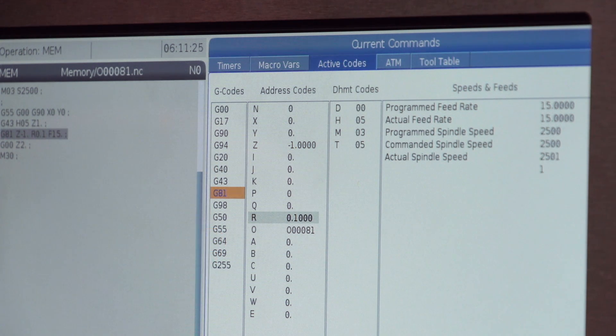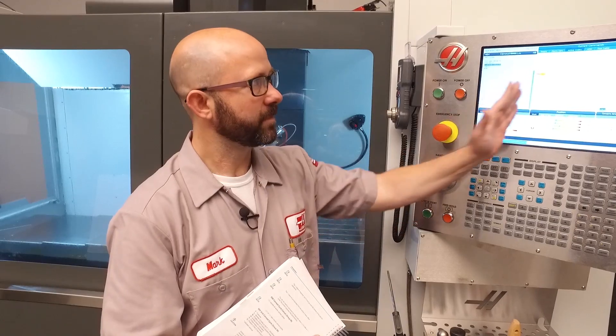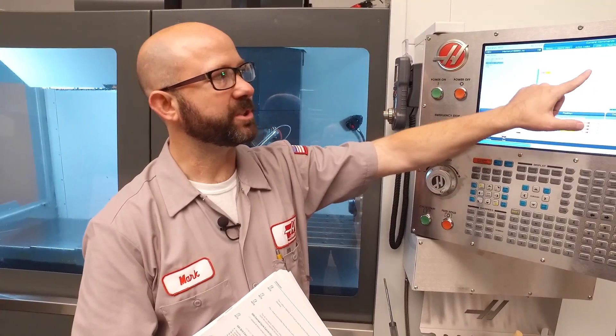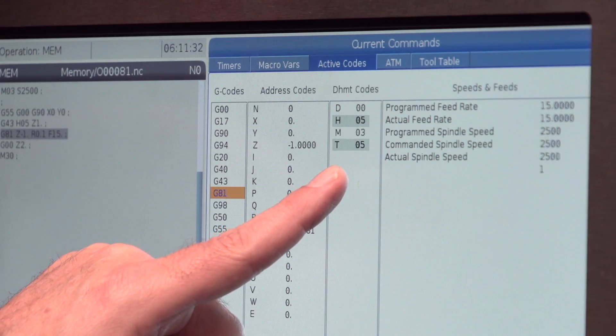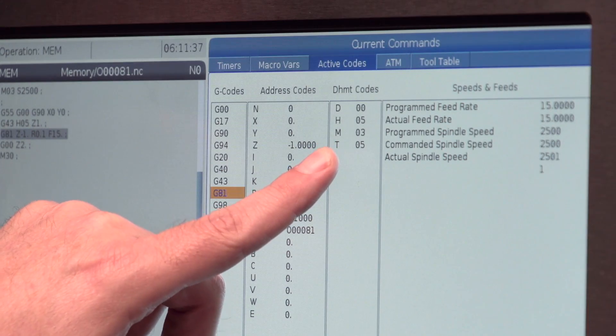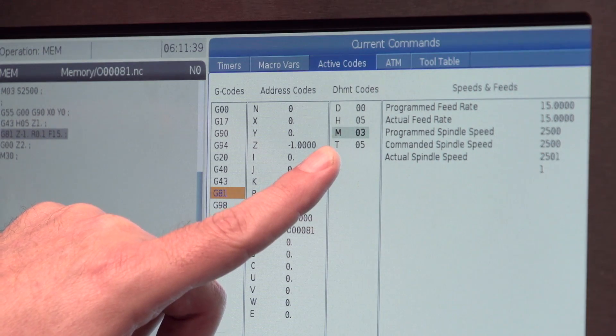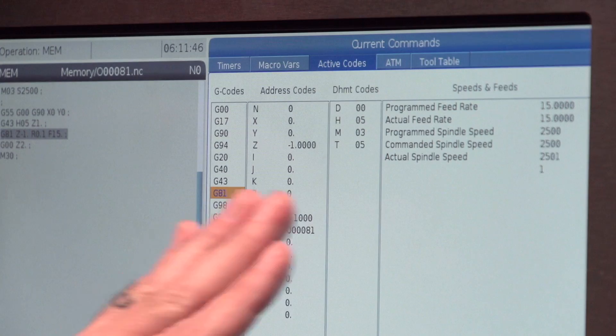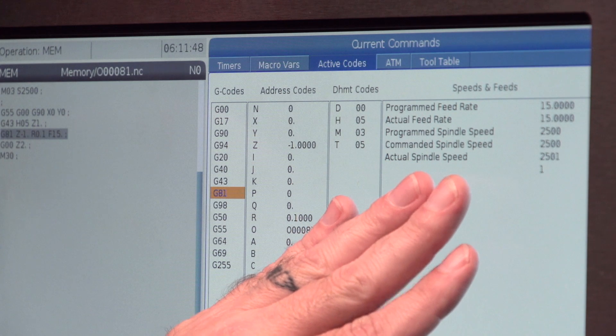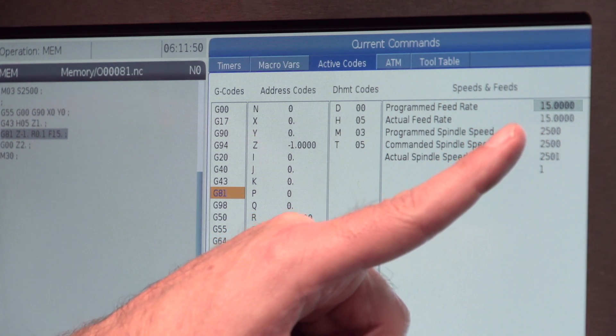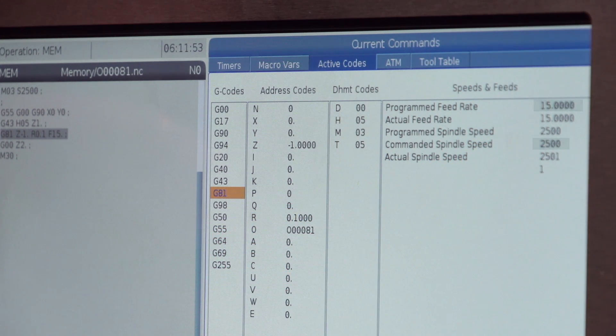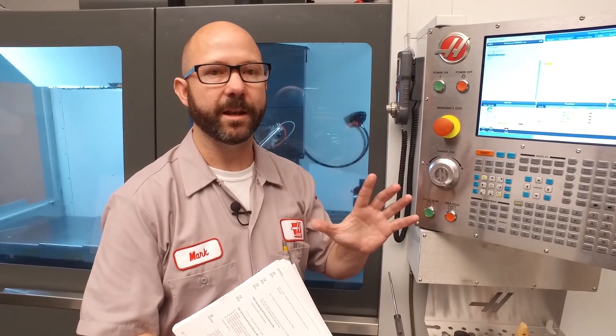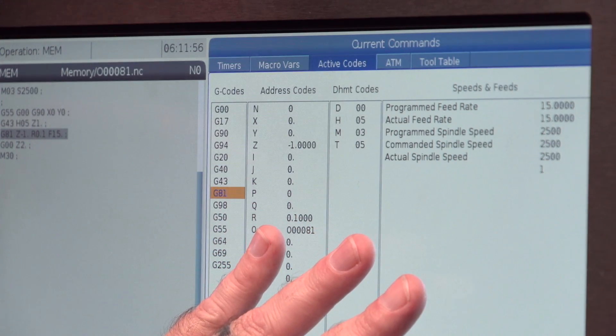Those are the address codes I used with my G-81 cycle. The next column shows an H and T value of .5. I'm using tool 5 and offset 5. Right now it shows an M value of M03. That's telling my spindle to go clockwise. And finally, we have our feeds and speeds. 15 inches a minute, 2500 RPMs. All of the information that we needed is displayed on the current commands page.